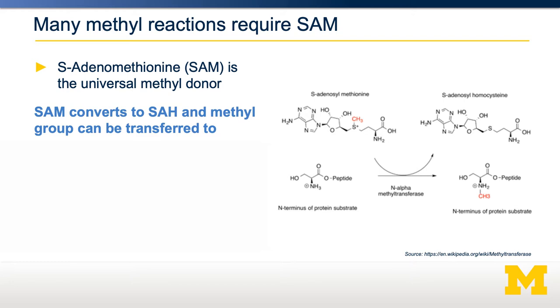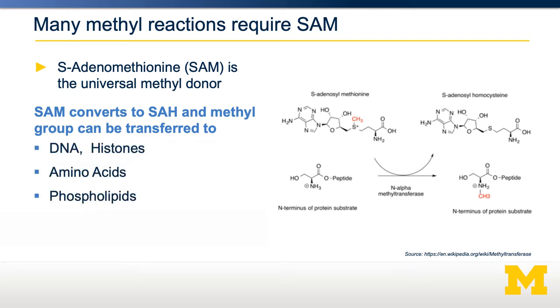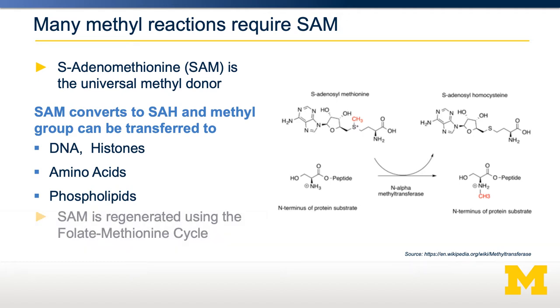The substrates of this methylation can include DNA, histones, amino acids, and phospholipids — all of which are important for growth and development. In order to have a constant supply of SAM, you need to regenerate SAM from SAH.